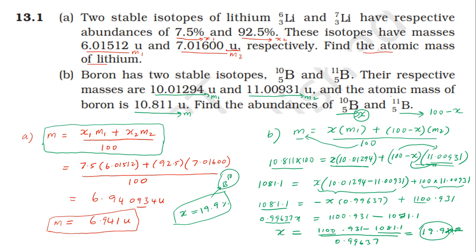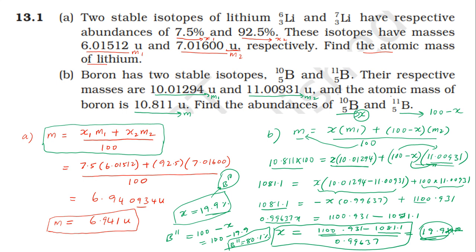The abundance of boron-10 is 19.9% and boron-11 is (100 minus 19.9) = 80.1%. So the final answers are: boron-11 abundance 80.1% and boron-10 abundance 19.9%.